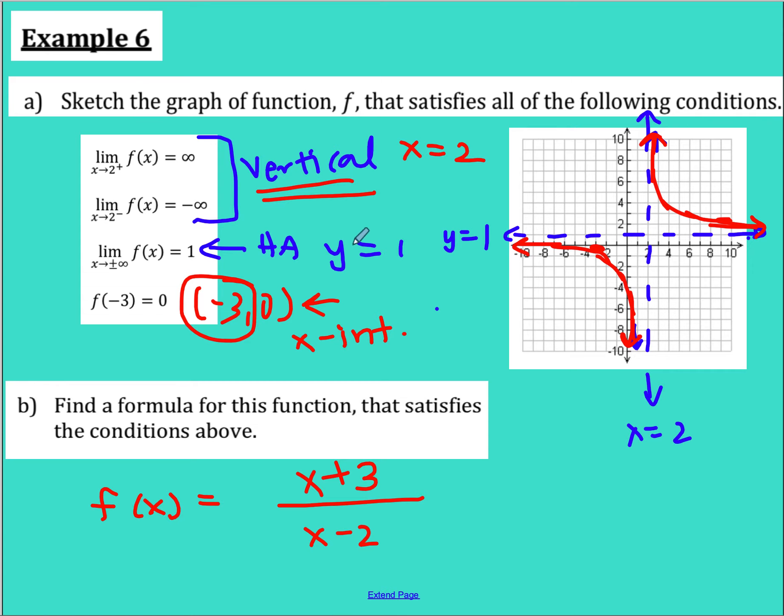Now horizontal asymptotes are from doing leading term over leading term. So if I were to do x over x, that would be one, which matches up with what I have here. So here is a possible equation that I could have. So f of x equals x plus three over x minus two. That is example six.